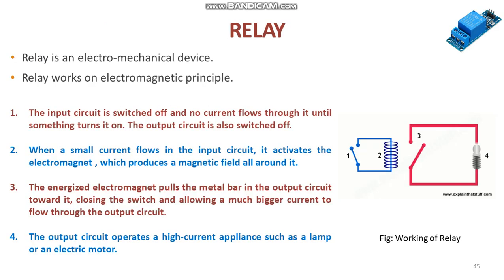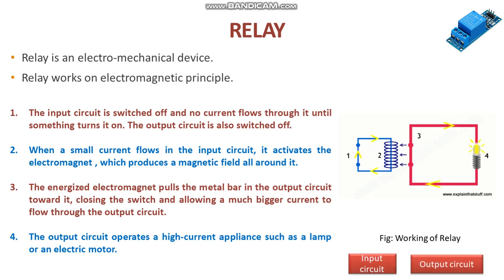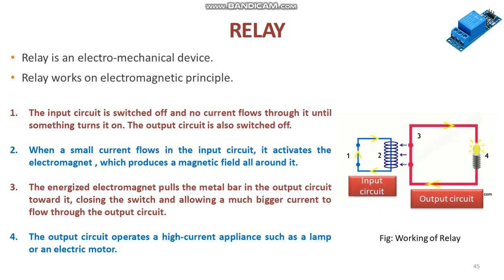Next, moving on to the next component, that is the relay. A relay is an electromagnetic switch operated by a relatively small electric current that can turn on or off a much larger electric current. Relay works on the principle of electromagnetic induction. As shown in the diagram, the input circuit is switched off and no current flows through it until something turns it on. The output circuit is also switched off.